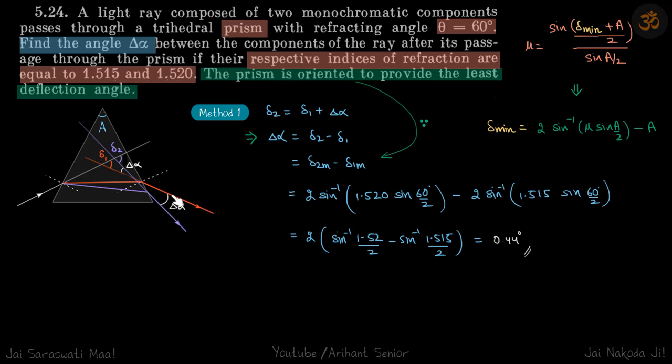Now how do we do this angle delta alpha? So if you just extend both the lines, so wherever it cuts the original line, so that this is the net deflection of the first ray delta one, and this is the net deflection of secondary delta two.